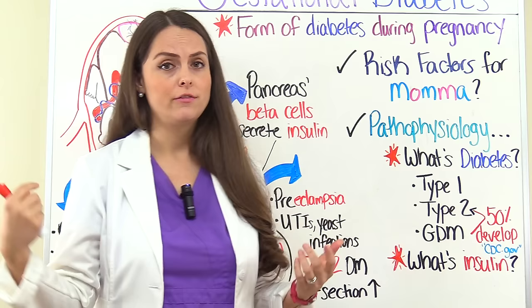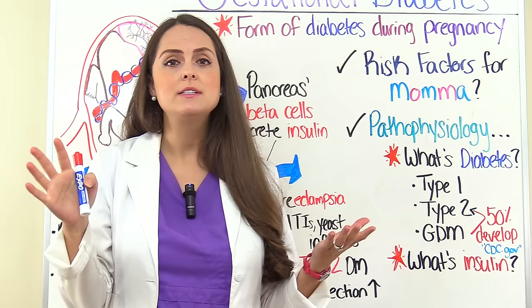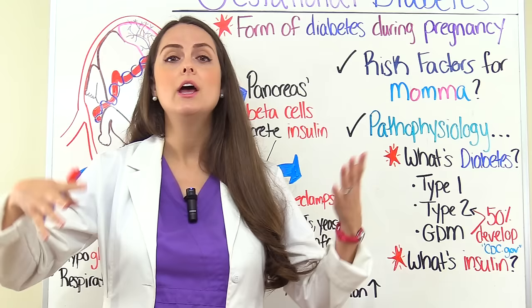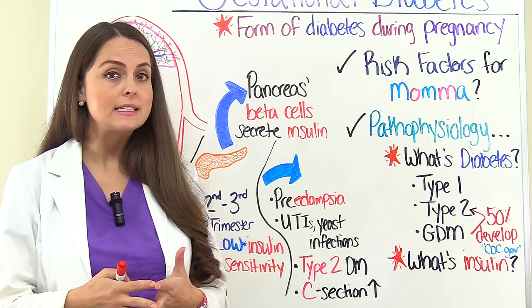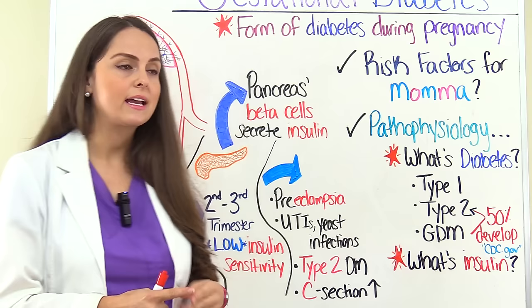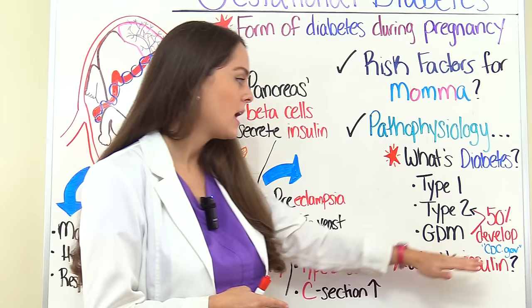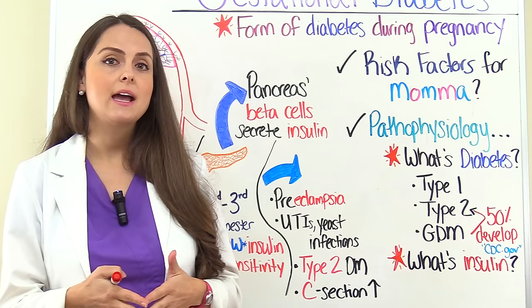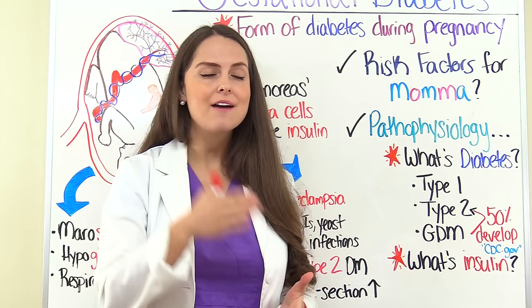Then we have type 2 diabetes, which is an insulin resistance issue. The cells aren't receptive to that insulin, so they don't take in the glucose, and the glucose stays in the blood causing hyperglycemia. Gestational diabetes is very similar to type 2 diabetes — there's an insulin resistance issue and it occurs during pregnancy during that second to third trimester. However, it tends to disappear after birth once the baby has left mama's body. An interesting statistic from CDC.gov is that about 50% of women who have gestational diabetes will actually go on to develop type 2 diabetes.